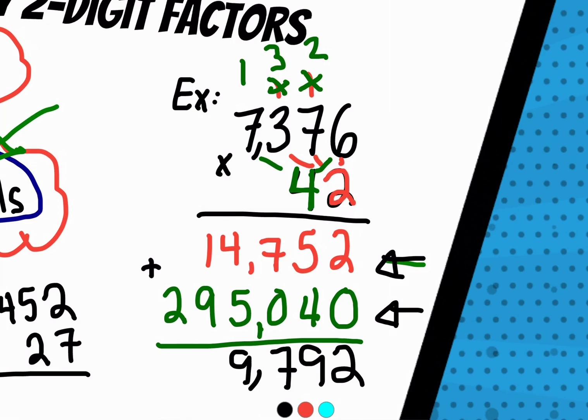Four plus five is nine. One plus nine is 10. And one plus two is three. So I get the final answer of 309,792.